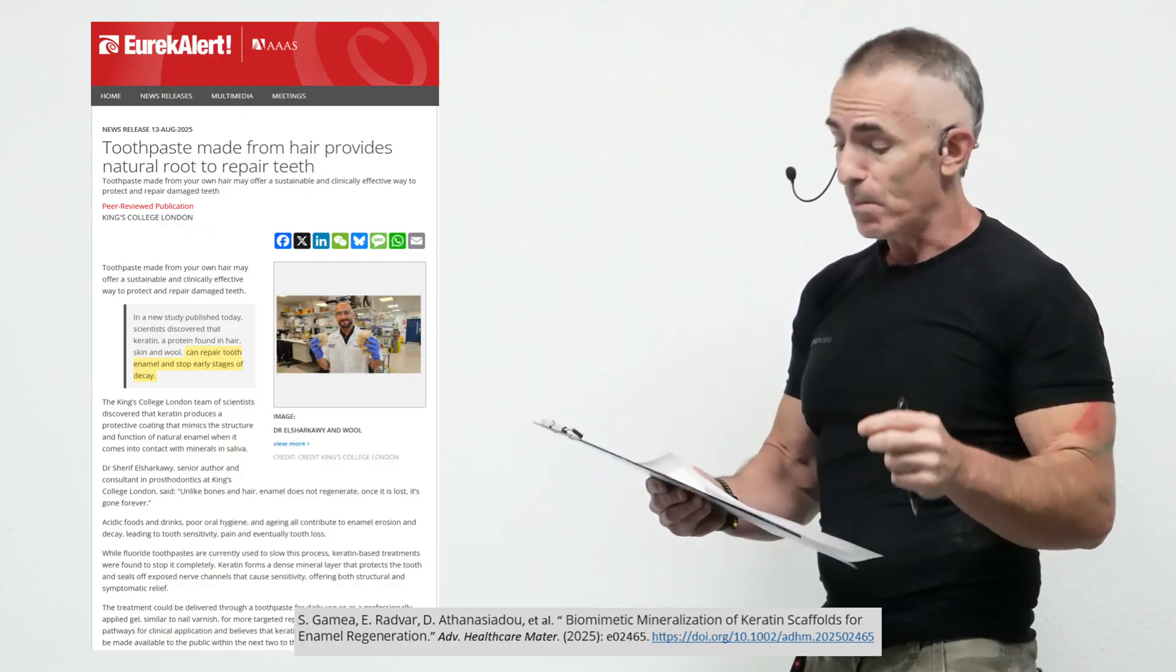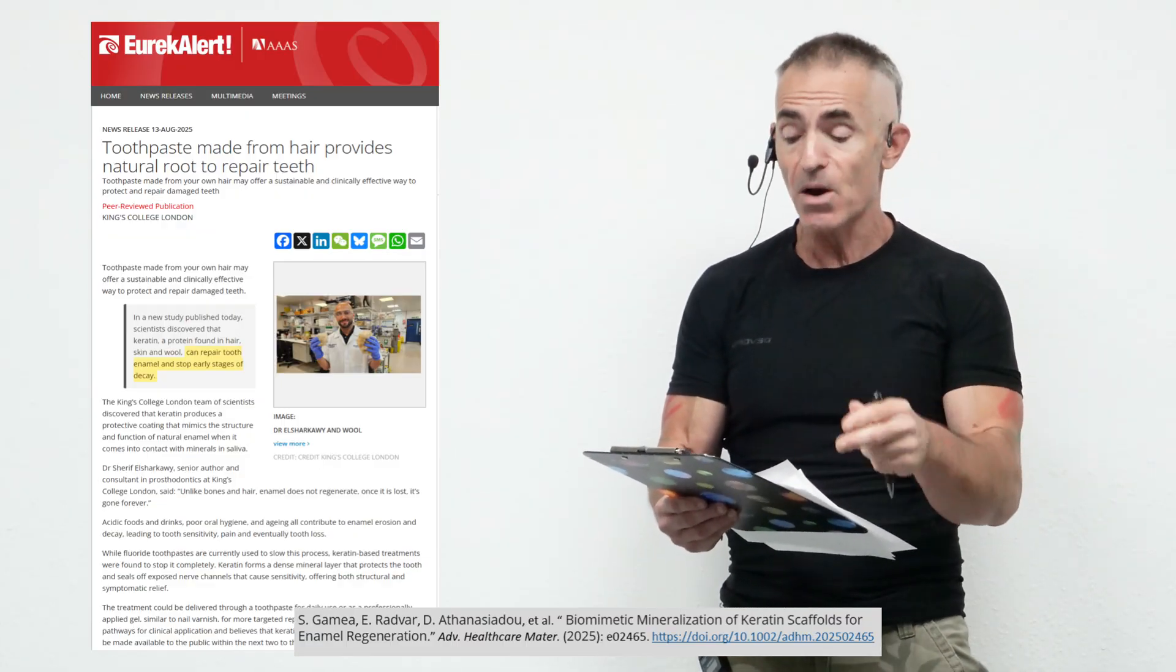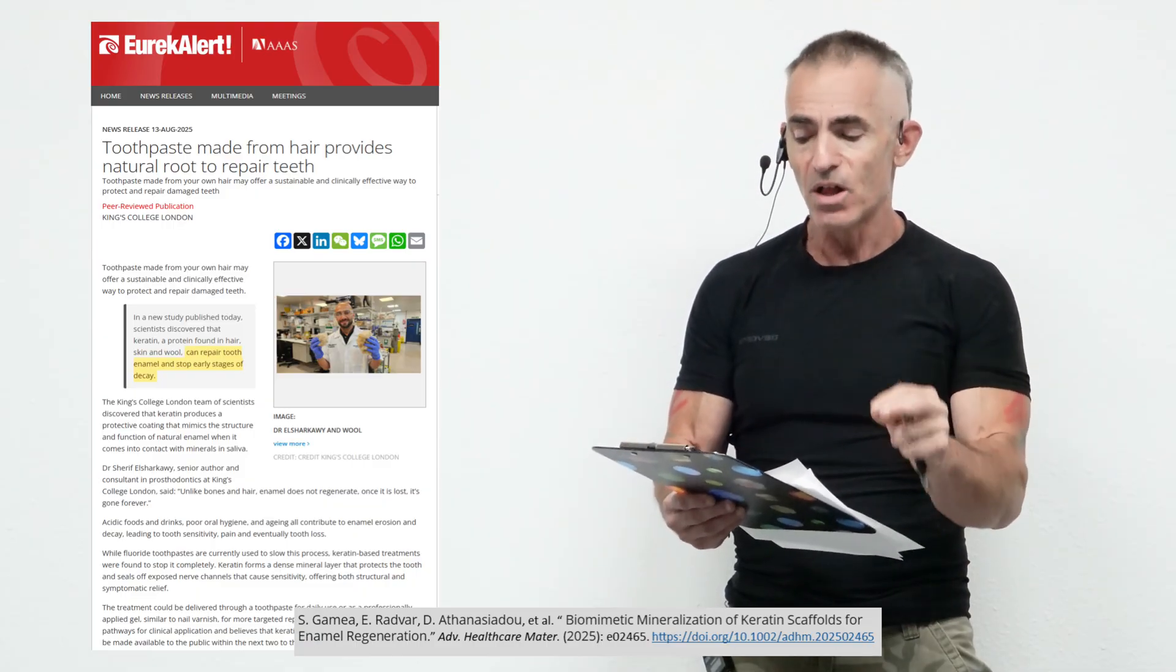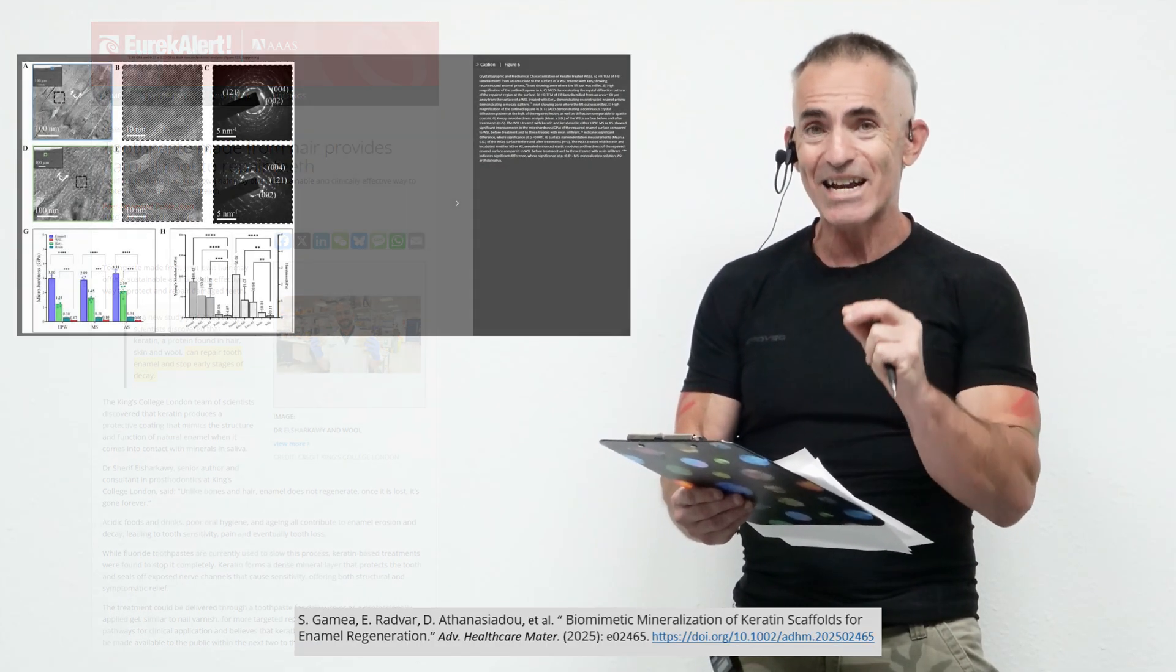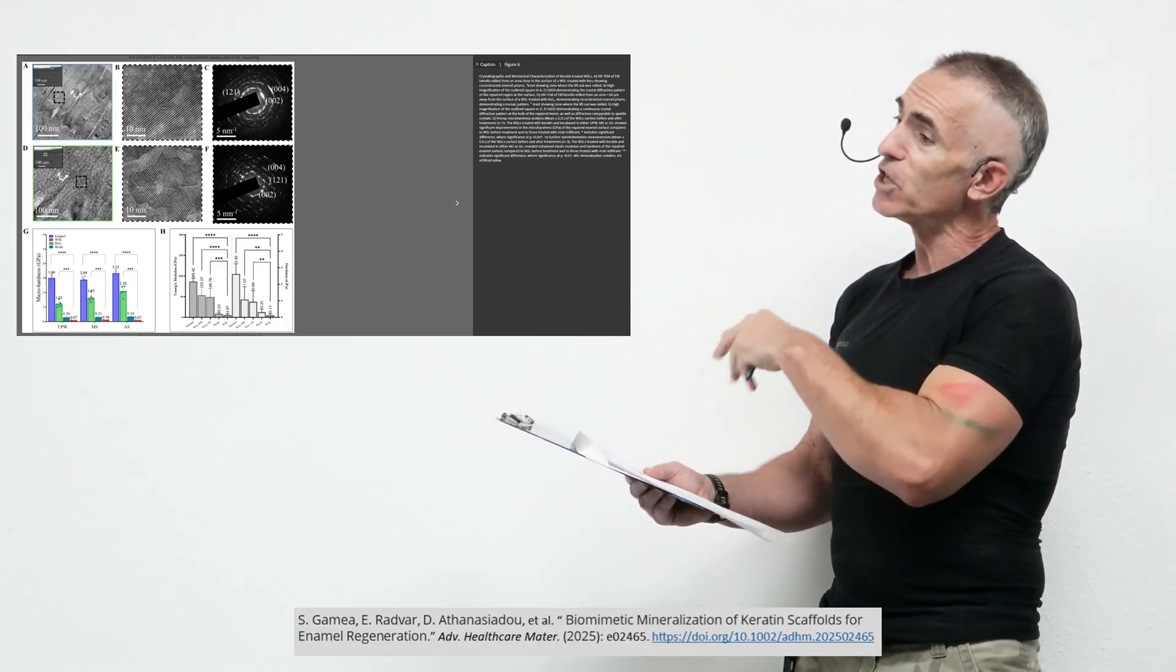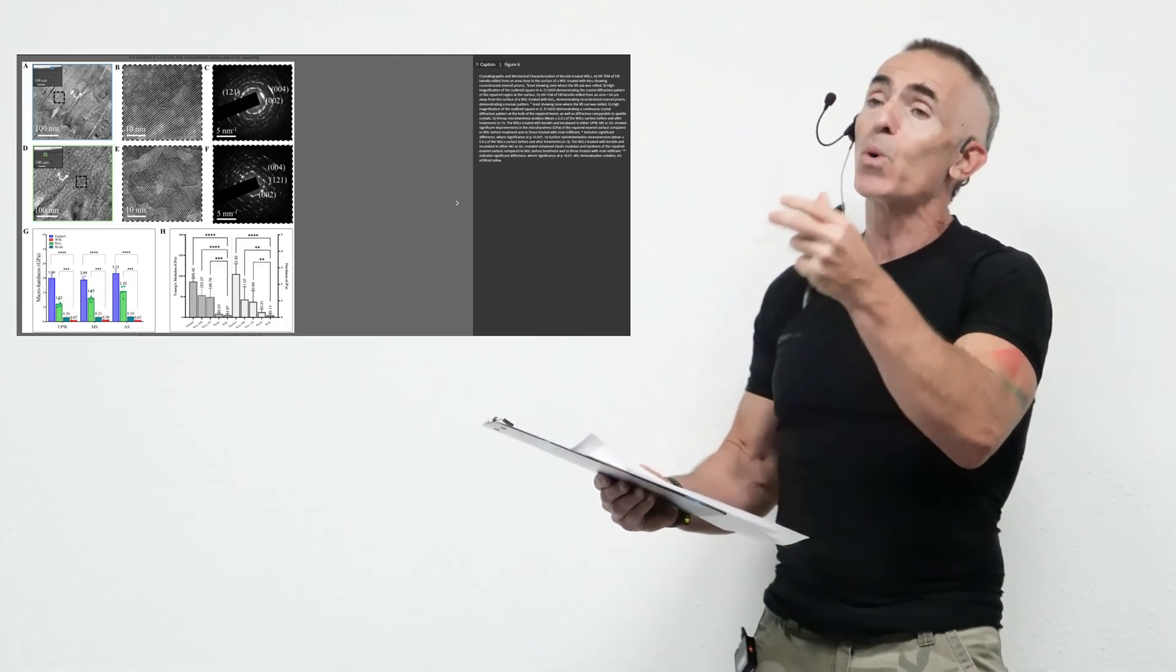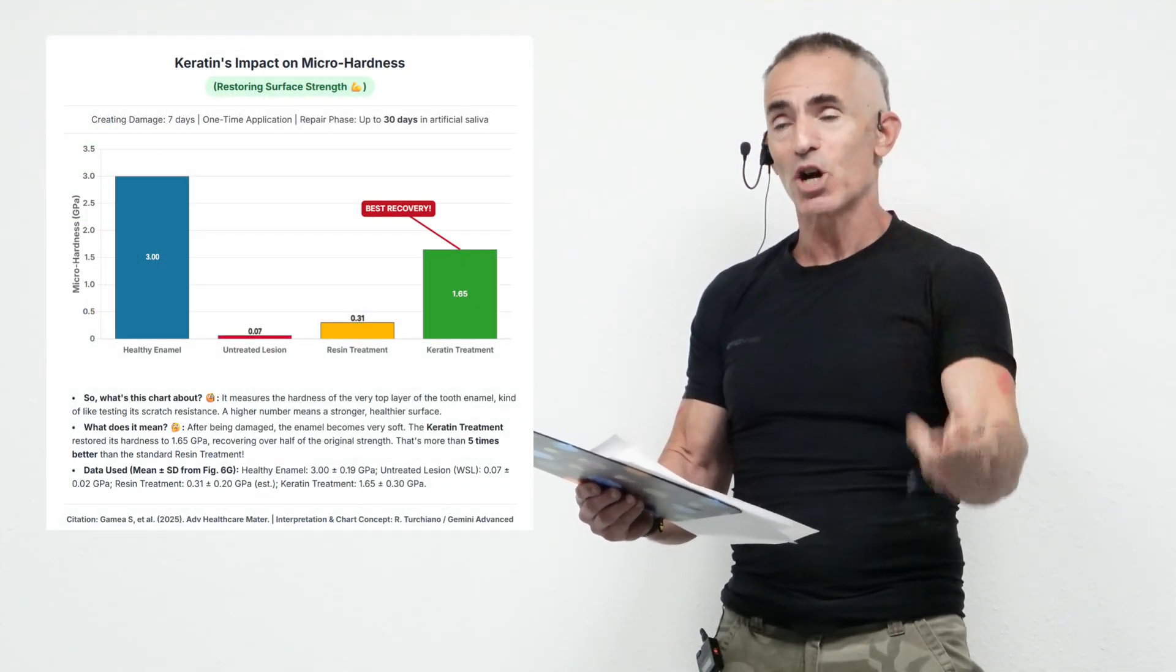In a new study published today, scientists discovered that keratin, a protein found in hair, skin, and wool, can repair tooth enamel and stop the early stages of decay. Let's look right at the raw data. This gives you a little bit of a pretense of what's actually in the study itself, but we simplified for you, and here we'll look at a bar chart.